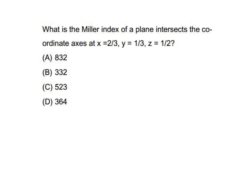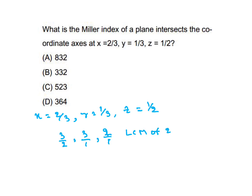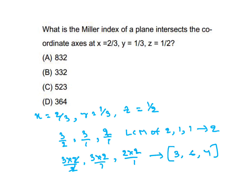What is the Miller index of a plane that intersects the coordinate axes at x = 2/3, y = 1/3, z = 1/2? Take the reciprocals: 3/2, 3/1 (which is 3), and 2/1. The LCM is 2. Multiply through to get integers: 3, 6, 4. So the answer is (3 6 4) — D is the answer.